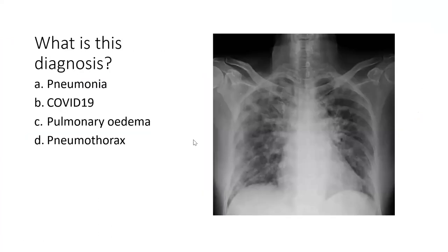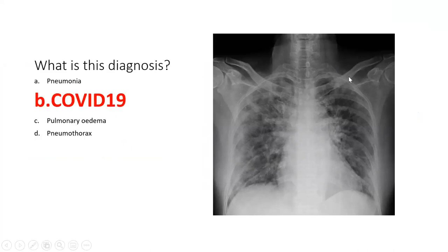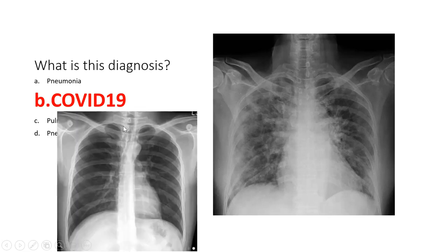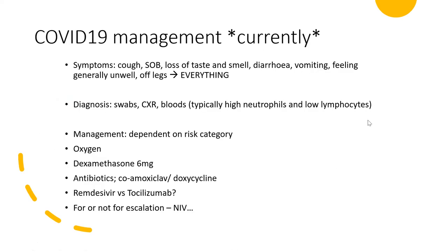MCQ: what is the diagnosis from this chest X-ray? COVID-19 pneumonia. They'll probably throw in a COVID question in finals. Doctors describe it as a fluffy appearance — it does just look fluffy all around. Compared to a normal chest X-ray with clear lung fields, this one has diffuse haziness worse at the peripheries.